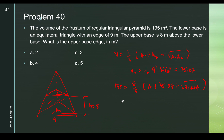Solving for A₂ gives approximately 3.89 square meters. Since A₂ = (1/2) x² sin 60°, we solve for the upper base edge x: (1/2) x² sin 60° = 3.89, giving x = 3 meters. So the upper base edge is 3 meters.